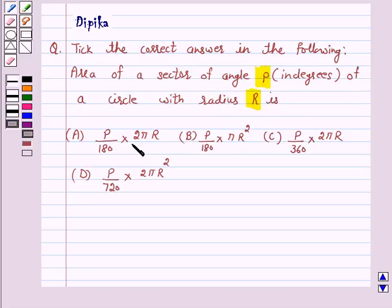A: P upon 180 into 2πR. B: P upon 180 into πR². C: P upon 360 into 2πR. D: P upon 720 into 2πR².